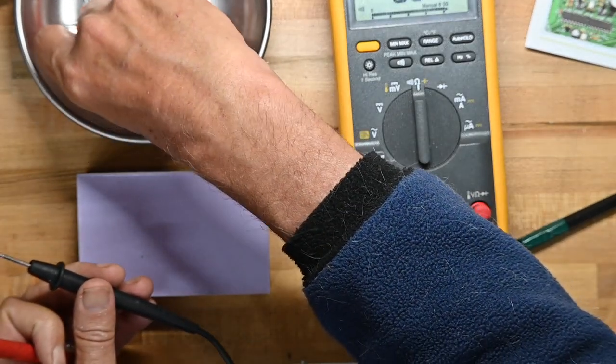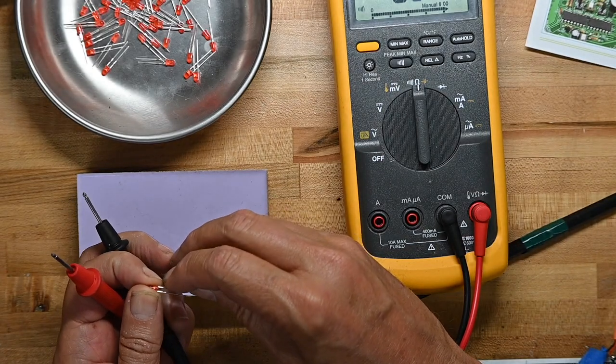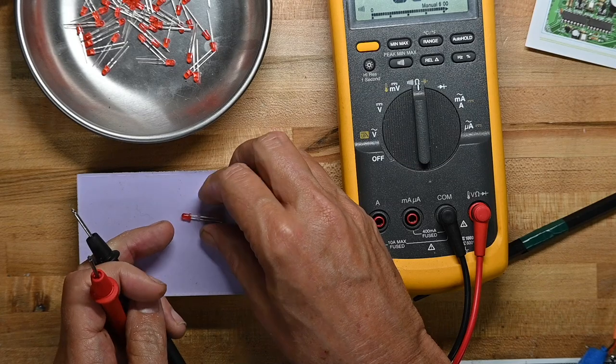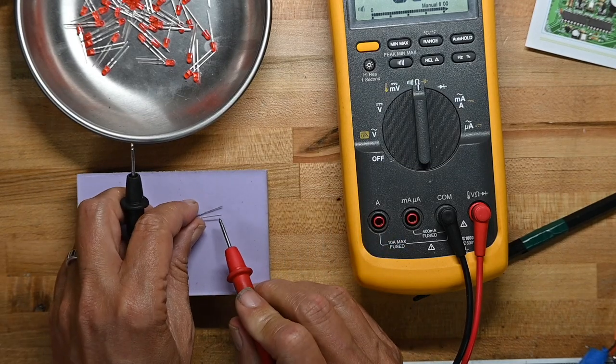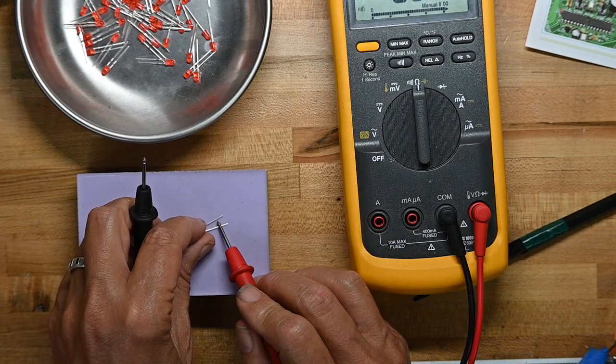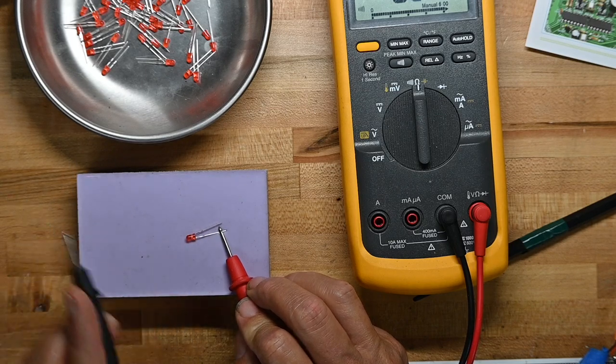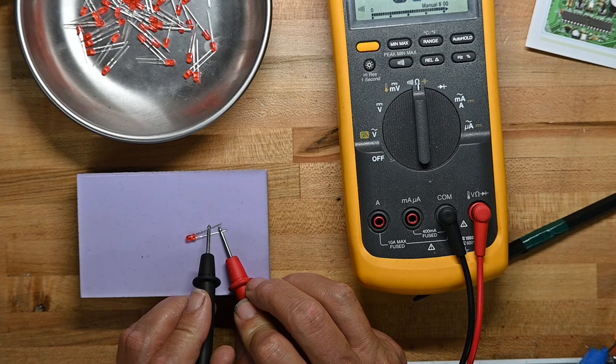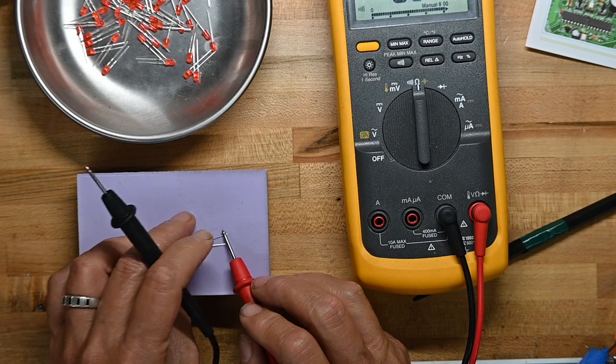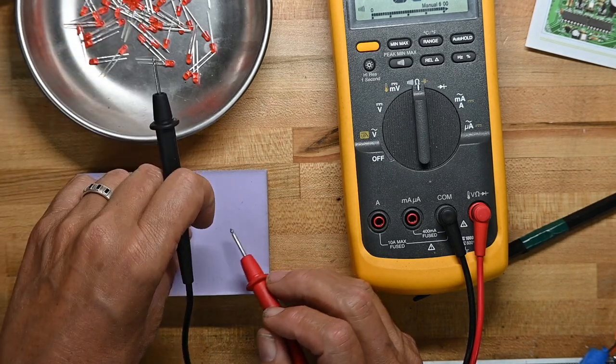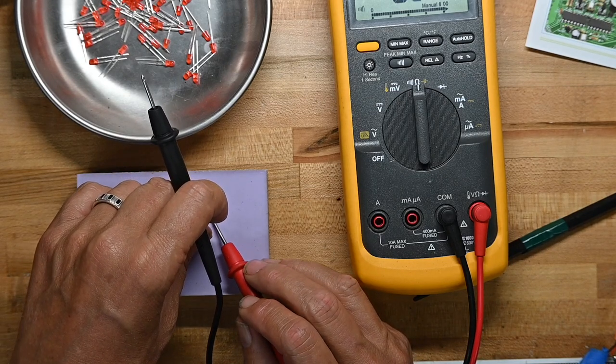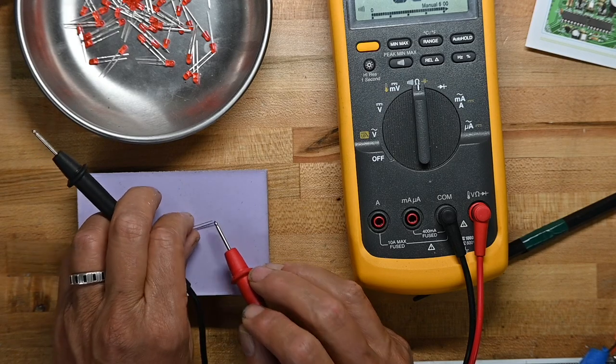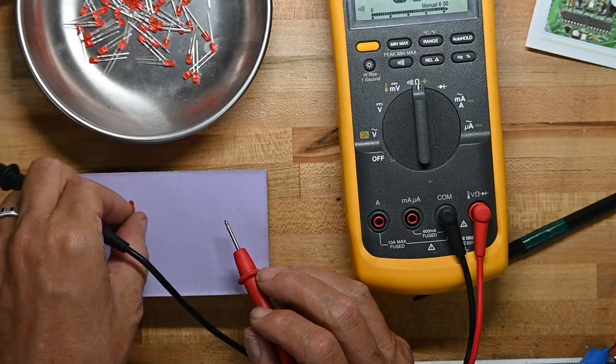What that's doing is sending a small amount of current through the meter leads, so I can put my positive side of my meter lead on the long leg, put the negative side on, and there the LED lights up. I sometimes do this with kits to check the LEDs because you can get some bad ones, and I go through the LEDs just to make sure they light up.